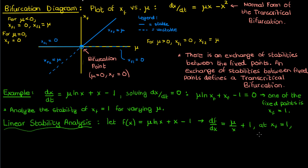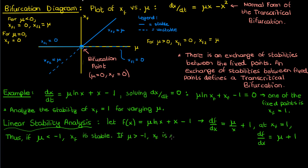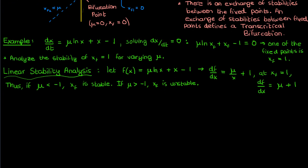Let f(x) equal the right-hand side of the differential equation. Taking the derivative of f(x) and substituting xf equals one tells us the stability of that fixed point. We find that the stability depends on μ plus one: when μ is less than negative one, the fixed point is stable, and when μ is greater than negative one, the fixed point at xf equals one is unstable. So there's a change in stability as we cross μ equals negative one — this could be a transcritical bifurcation, but to confirm, we'll perform a variable substitution.